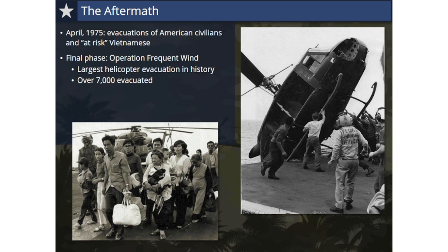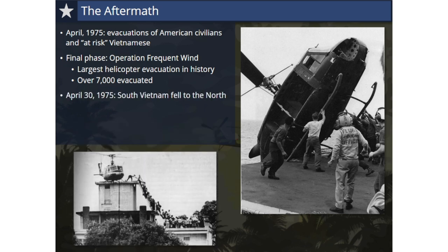South Vietnamese helicopters assisted as well, and when ships' decks became too clogged for other choppers to land, some of their helicopters were pushed overboard to allow others to land. Others were told to drop off their passengers, take off, and ditch their choppers in the sea where they would be rescued. On April 30, just hours after the last helicopter left the American Embassy in Saigon, North Vietnamese tanks crashed through the gates of the Presidential Palace and put up their flag. The South had fallen to the North, and the Vietnam War was over.